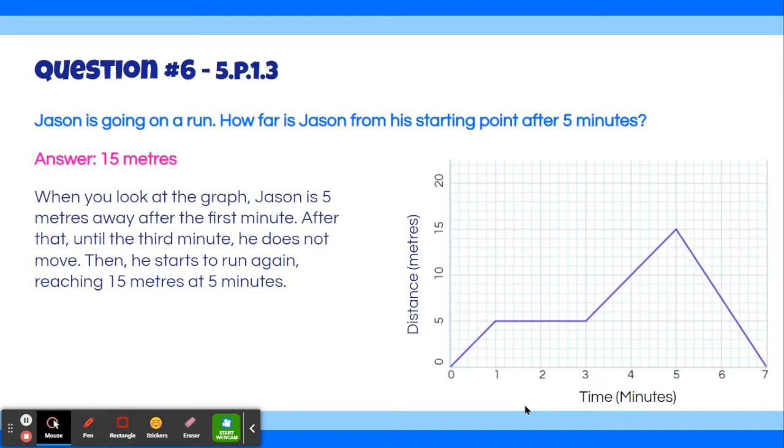When you look at the graph, Jason is 5 meters away after the first minute. You can see that right here, where it says the time is 1 minute, and the distance is 5 meters. So after that, he remains at a constant speed, meaning he doesn't move until the 3rd minute, which you can see right there. After that, he starts to run again, and he finally reaches 15 meters at 5 minutes.